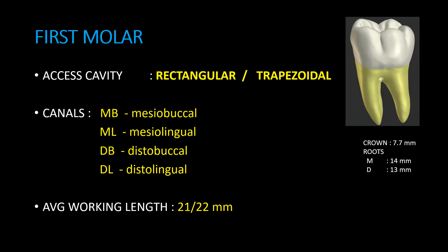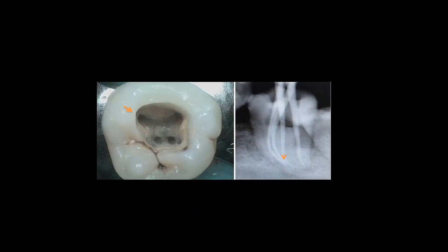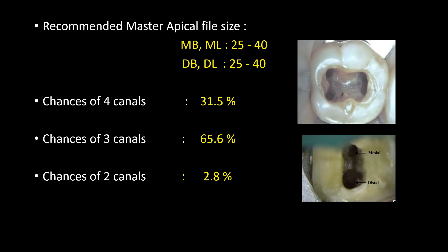First molar. Access cavity is rectangular or trapezoidal shaped. Canals include MB (mesiobuccal), ML (mesiolingual), DB (distobuccal), and DL (distolingual). Average working length is 21–22 mm. Here, a pic shows trapezoidal shaped access cavity. Recommended master apical file size: MB and ML is 25–40; DB and DL is 25–40. Chances of four canals is 31.5%, three canals is 65.6%, two canals is 2.8%. A pic shows rectangular shaped access cavity of mandibular first molar with three and two canals is shown.